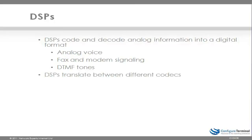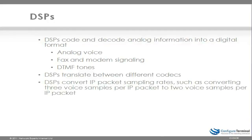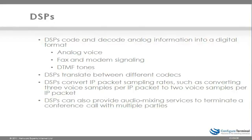DSPs can also translate between different codecs by doing what's called transcoding. Transcoding is essentially taking one codec like G.729 and converting it or translating it into another codec such as G.711, in very much the same way as English and French can be translated. DSPs also convert IP packet sampling rates, such as converting three voice samples per IP packet to two voice samples per IP packet. DSPs can also provide audio mixing services to terminate a conference call with multiple parties — in other words, setting up conferencing.